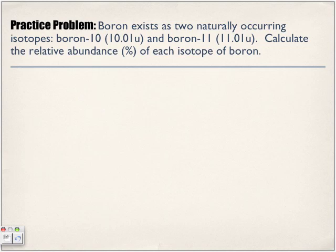Practice problem: Boron exists as two naturally occurring isotopes, boron-10 which is 10.01u and boron-11 which is 11.01u. Calculate the relative abundance of each isotope of boron. Let me give you a hint as to what we have.